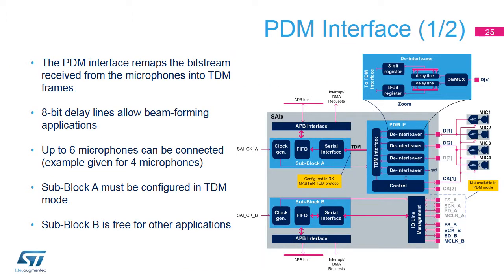The PDM interface remaps the bit stream received from the digital microphones into TDM frames. The PDM interface waits for the reception of 8 bits from each microphone before sending a new TDM frame. In addition, the PDM interface offers an 8-bit delay line for each microphone stream. These delay lines work with the resolution of the bit stream clock provided to the microphones. It enables beam-forming applications and removes constraints on microphone placements. When the PDM interface is enabled, the serial interface of sub-block A cannot be used to connect an external device. This serial interface is connected internally to the PDM interface and sub-block A must be configured in TDM mode as an RX master.